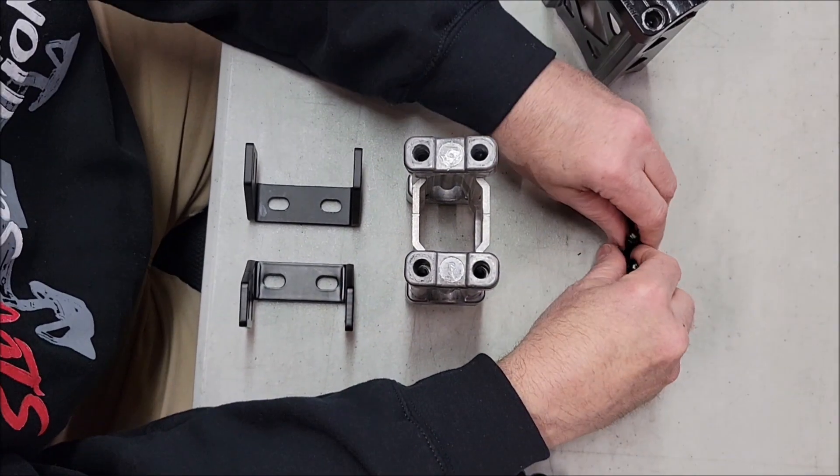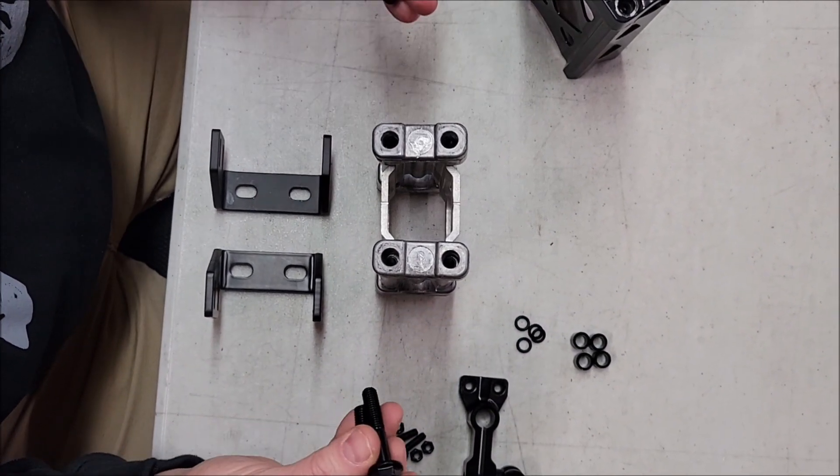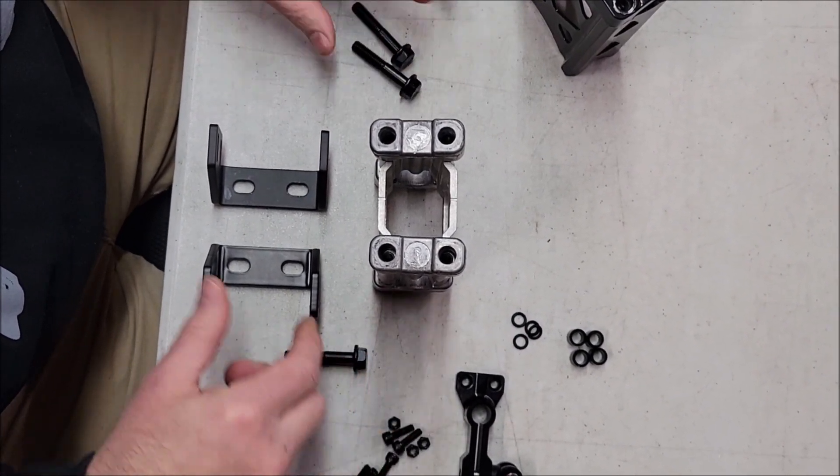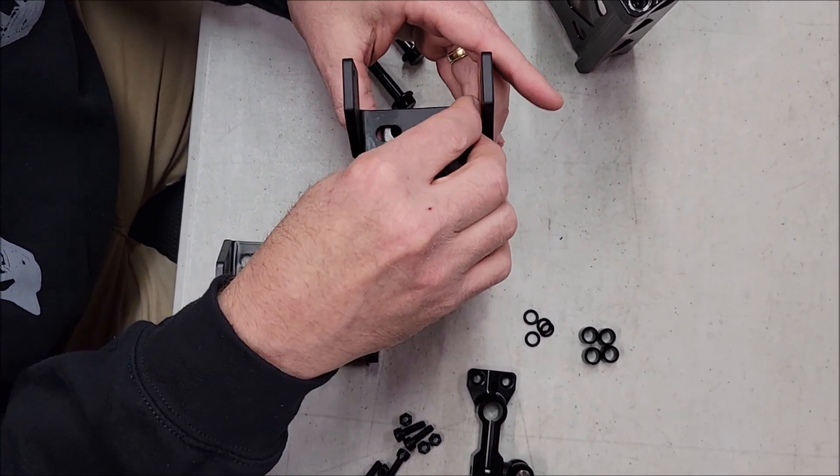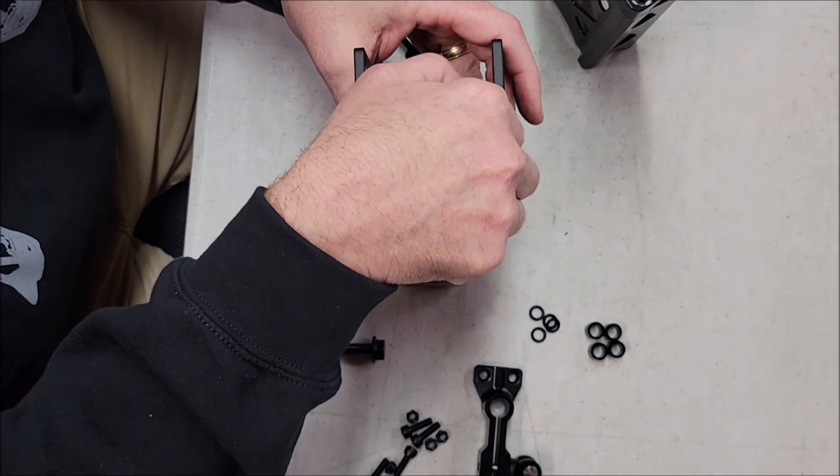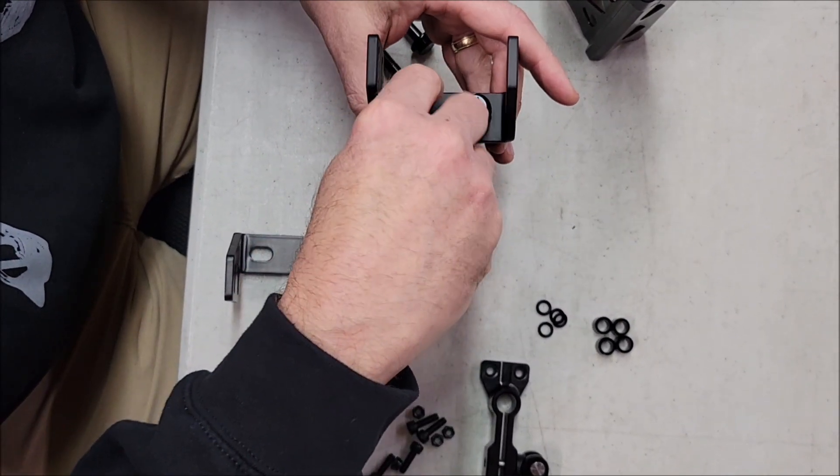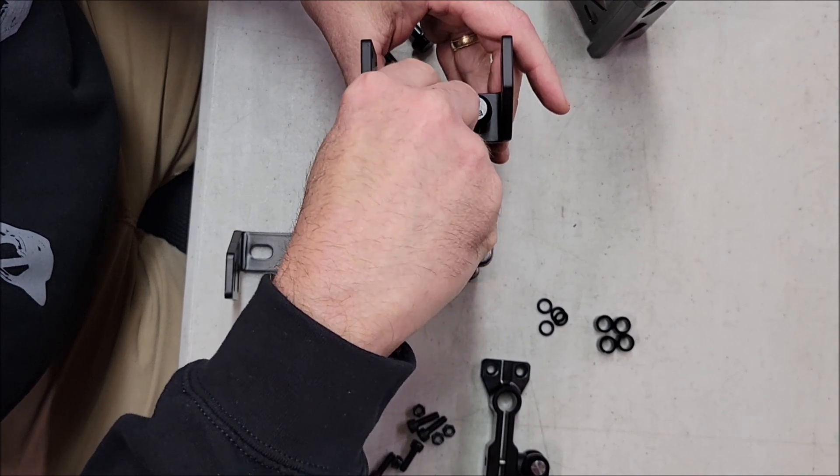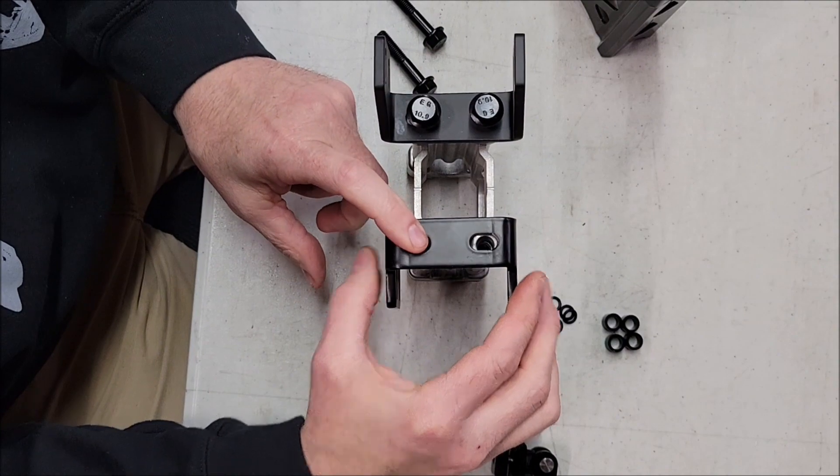All you're going to utilize on this particular setup is the bolts, the little bit longer bolts that we provided. If you're going to run the lift position, put your bracket on like so. If you're going to run it in the standard position, you just flip it over and run it like that.